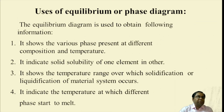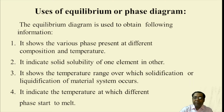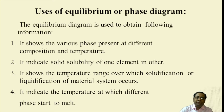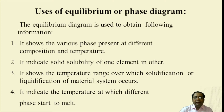The uses of equilibrium or phase diagram are listed below. It shows the various phases present at different composition and temperature. It indicates solid solubility of one element in another. It shows the temperature range over which the solidification or liquidification of a material system occurs. And lastly, it indicates the temperature at which different phases start to melt.